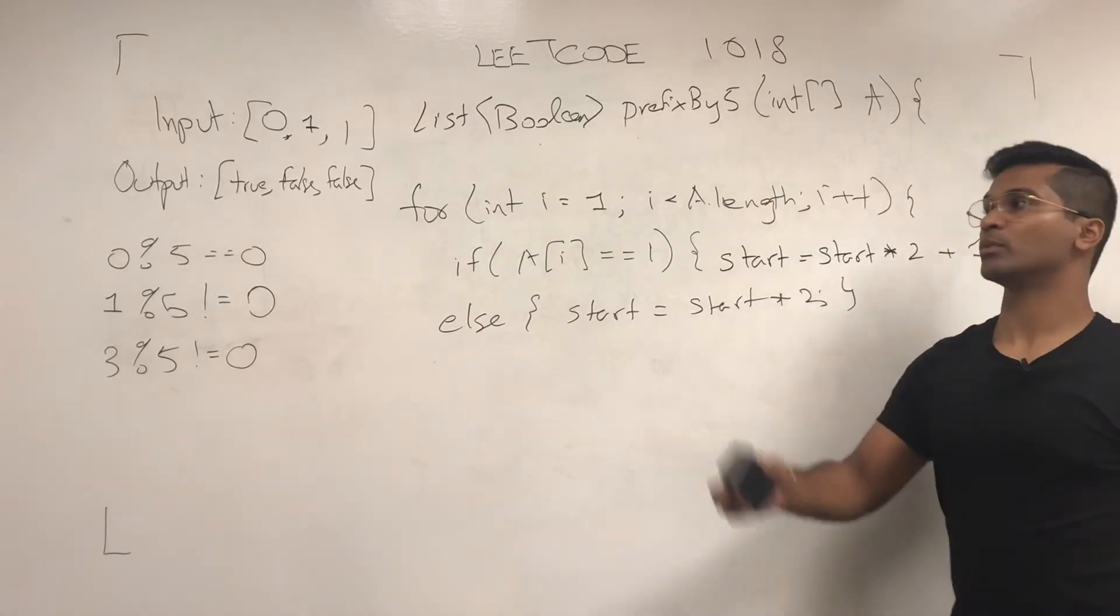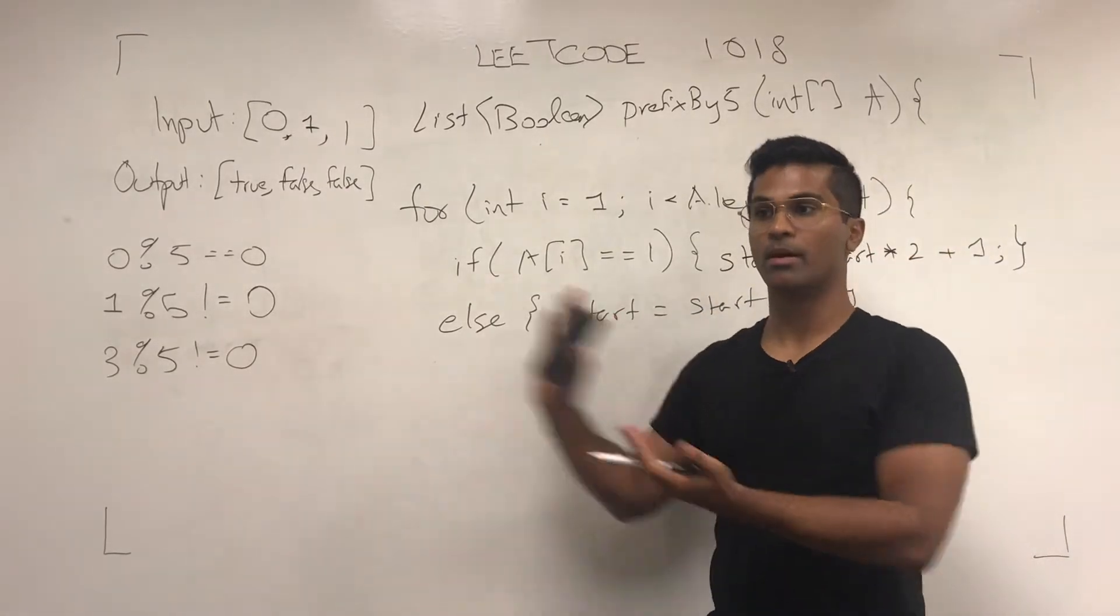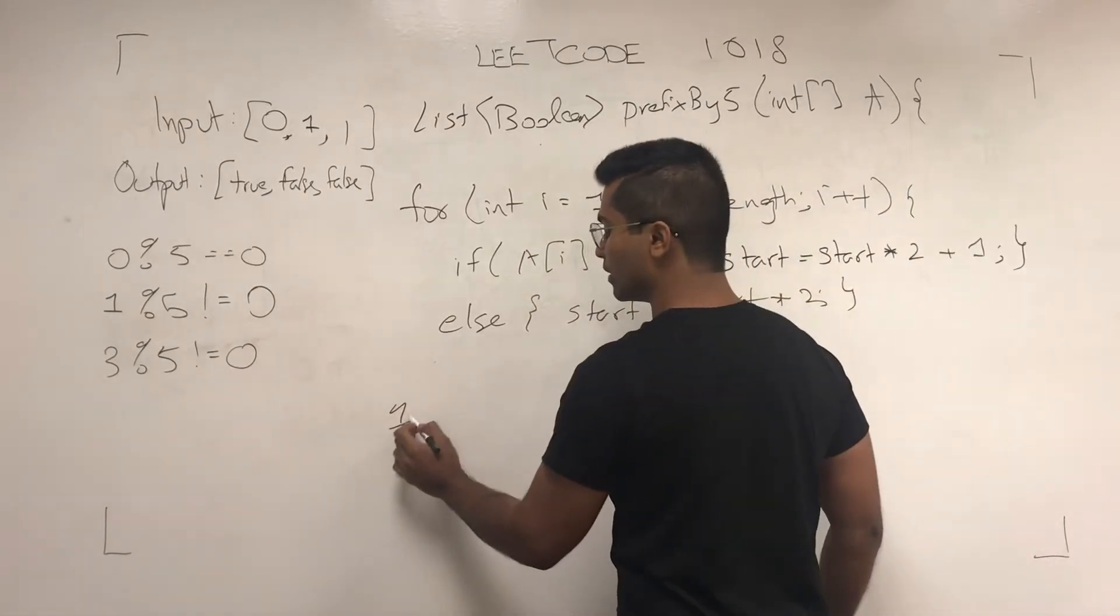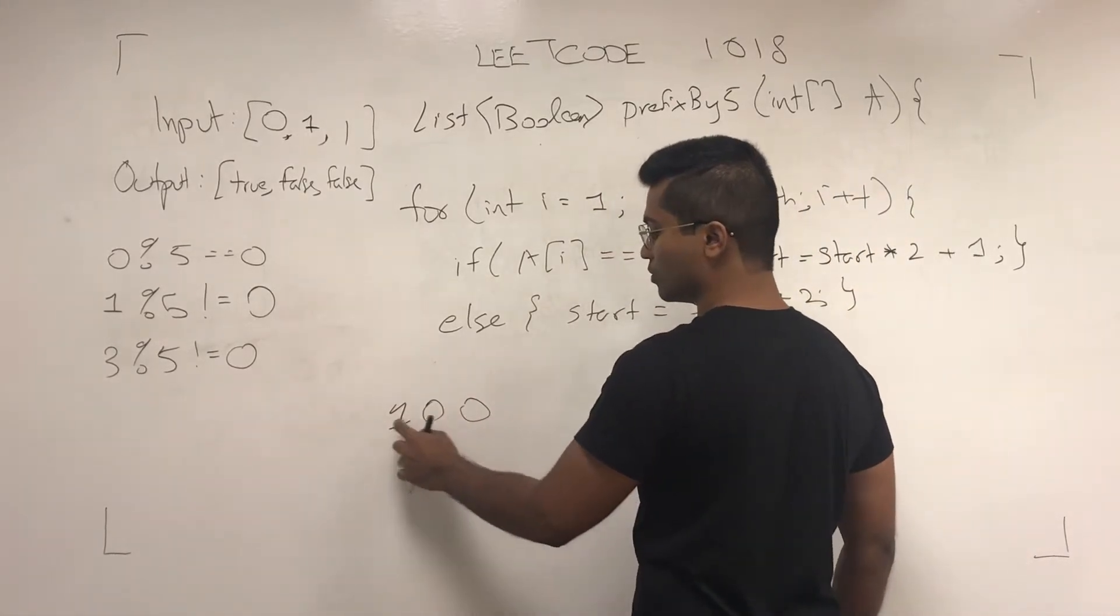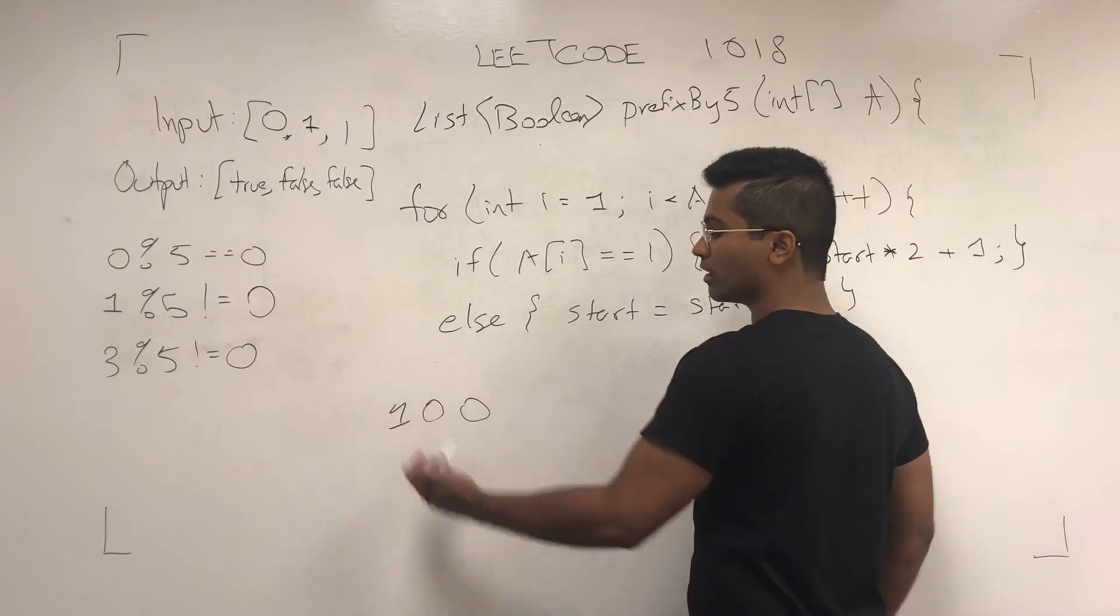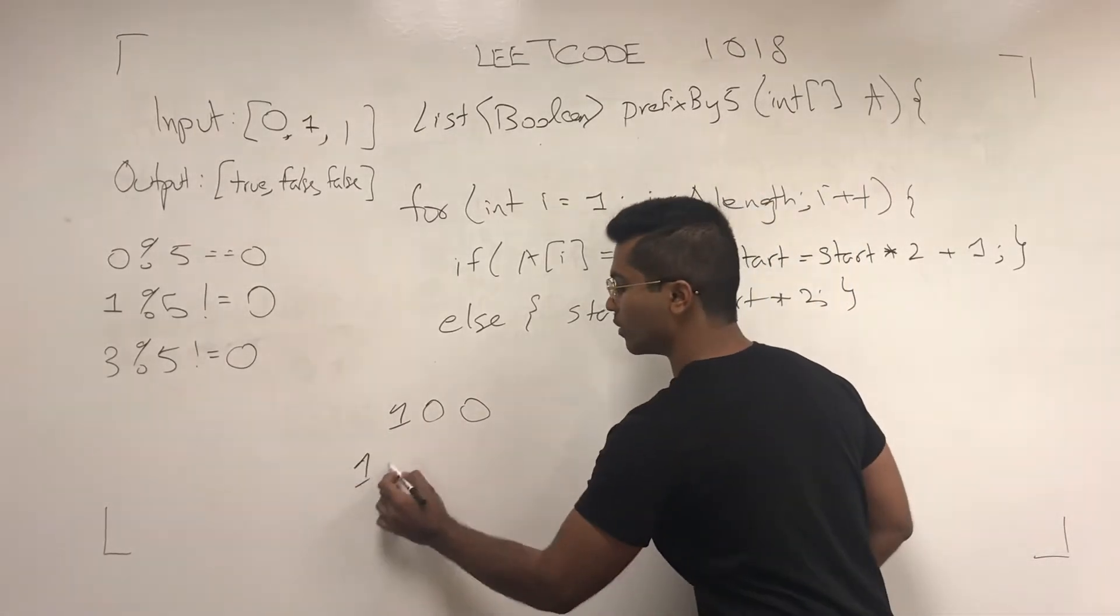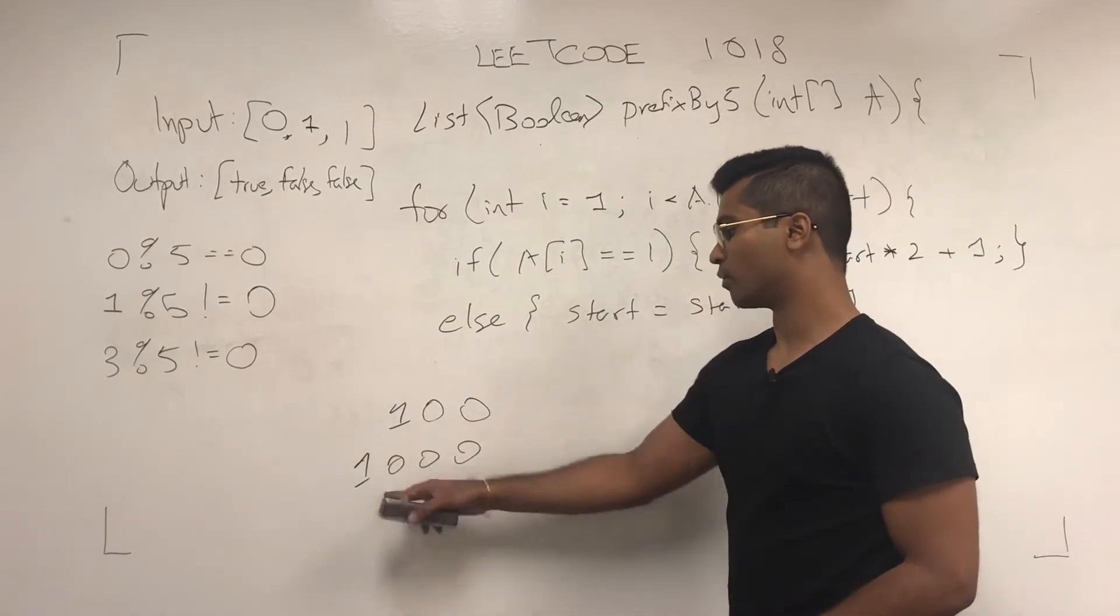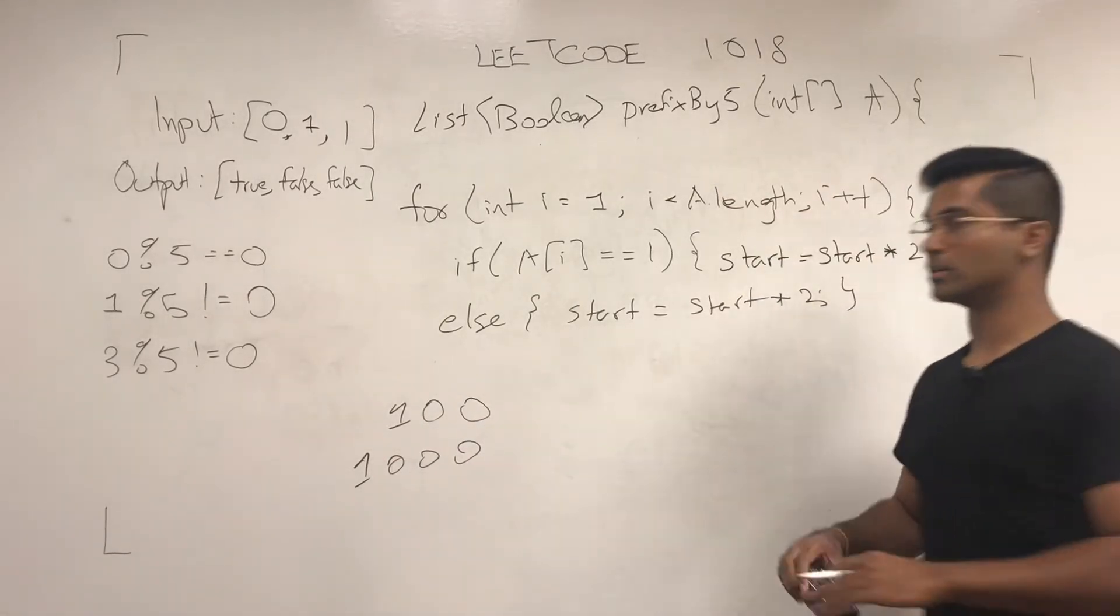We know this because when we slide a number over by 1 in binary, it's doubling it. So binary 4 would be like 0, 2, 1, 2, 4. Now if we want to double this, we just slide it over by 1 and that gives you 8, right? Let's see, 1, 2, 4, 1, 2, 4, 8. And that's pretty much how we do this one.